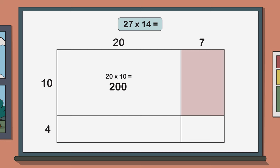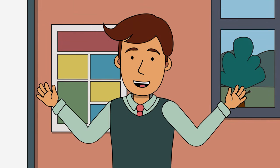This rectangle in the top right has a length of 7 and a width of 10 and 7 times 10 is 70. Starting to see how easy this is?